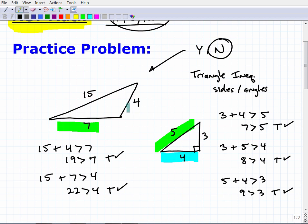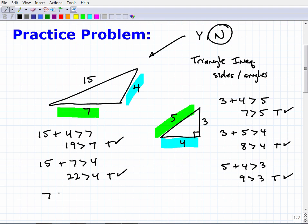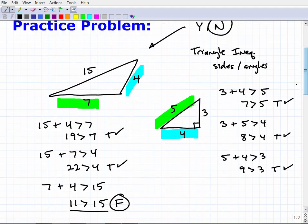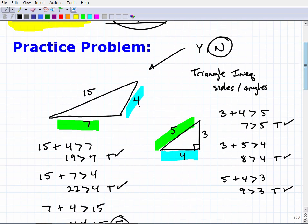But you can see here is where we're going to run into problems. If I take 7 and 4, let's do this right here. Is 7 plus 4 greater than 15? Well, 7 plus 4, that's 11. Is 11 greater than 15? Well no, that's false. 11 is not greater than 15. So we got a problem here because this plus this, these two sides, the sum of this is not greater than this side. This is not a triangle.